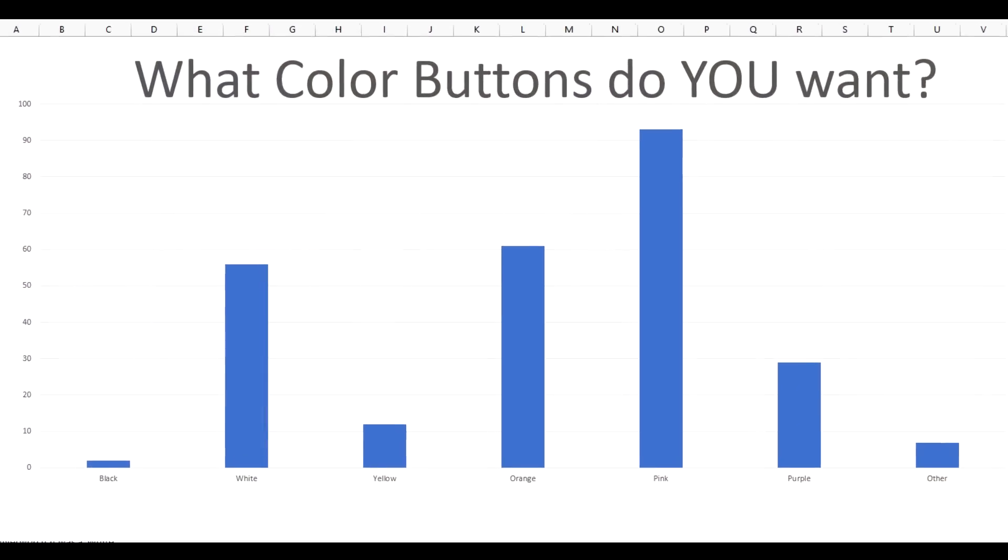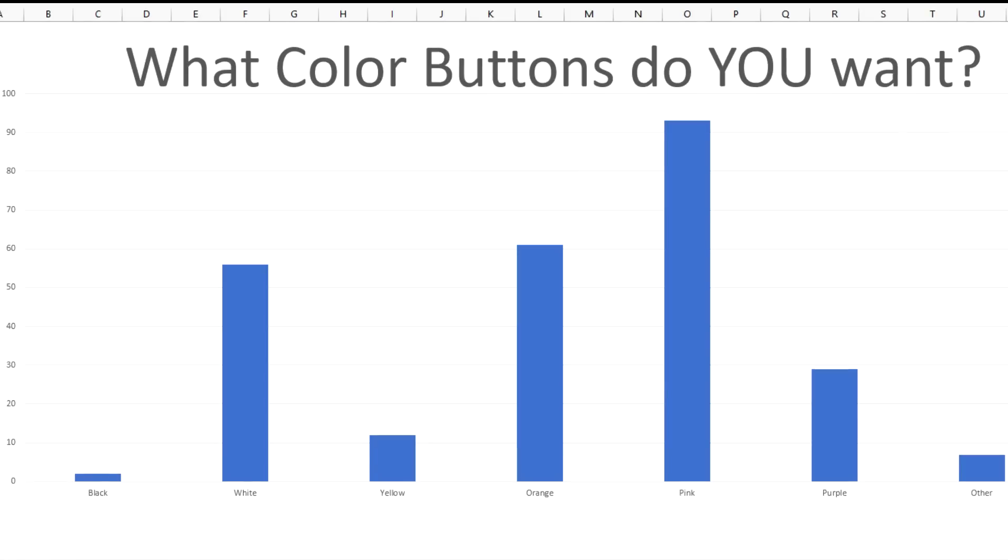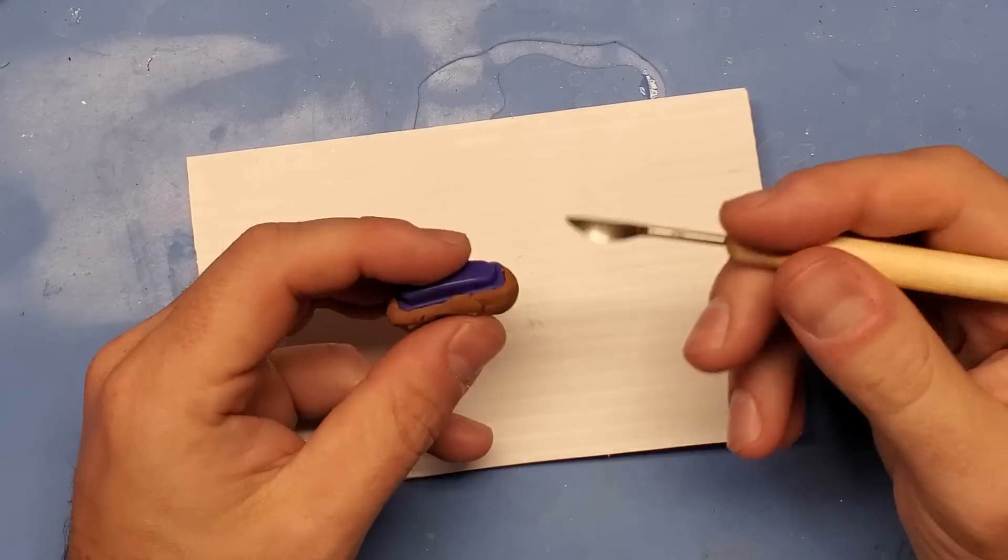And according to you guys, when you have an emerald blue shell, you wear pink buttons as well. Pink ended up running away with it, with about 35% of the vote. The next closest was orange, which took approximately 25% of the total vote.